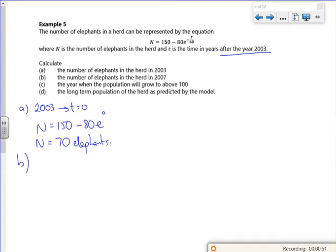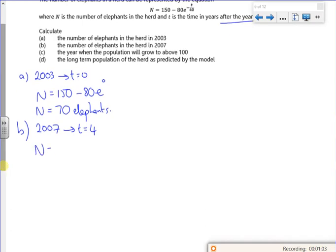B says the number of elephants in the herd in 2007. So 2007 will be if t is 4. So n, the number of elephants, is 150 minus 80 lots of e to the minus 4 over 40. The completed pack says 77.6. So dead on, the start of 2007, it was 77.6. So we're going with 77 elephants.